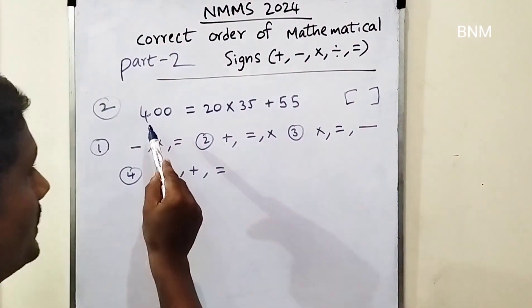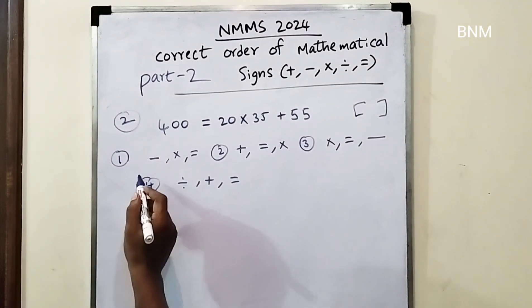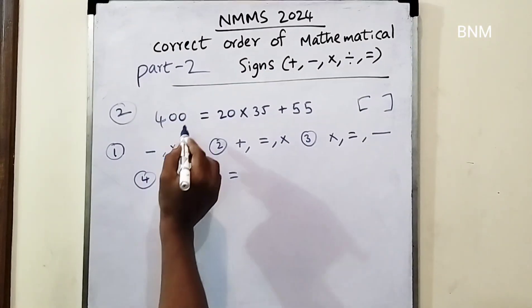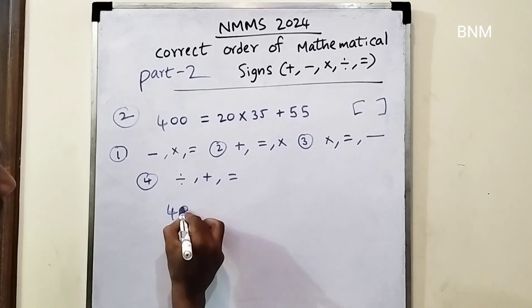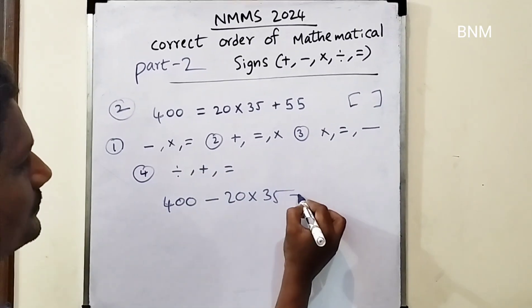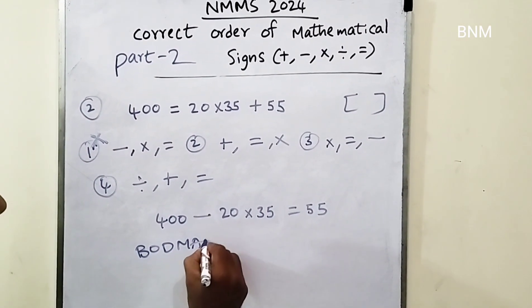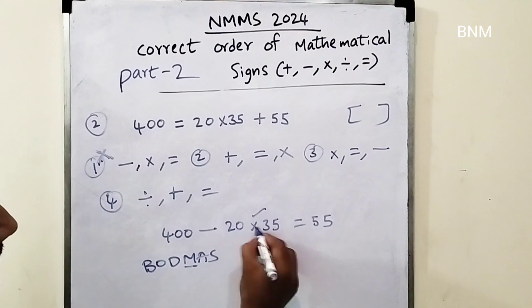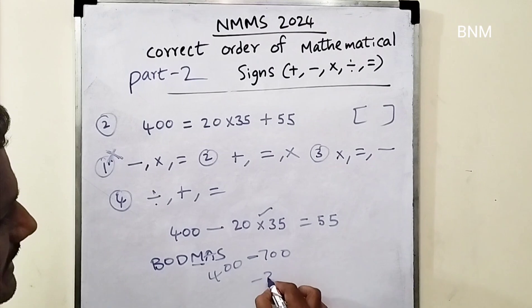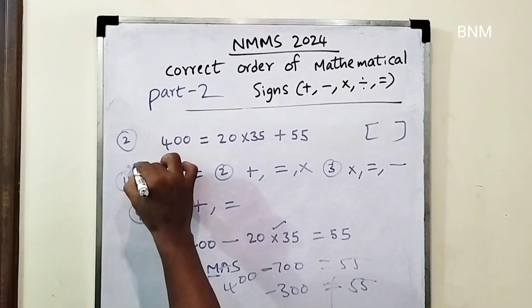First one, we have to find the right answer. 400 is equal to 20 into 35 plus 55. Here, 55 is equal to 55. There is no right answer.